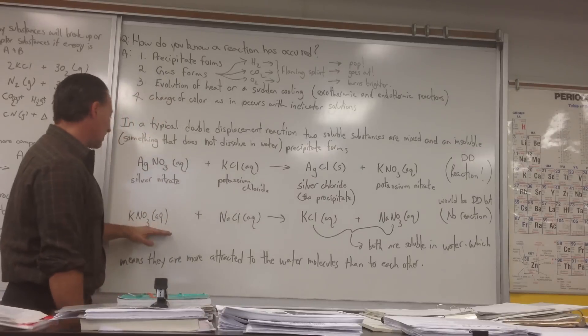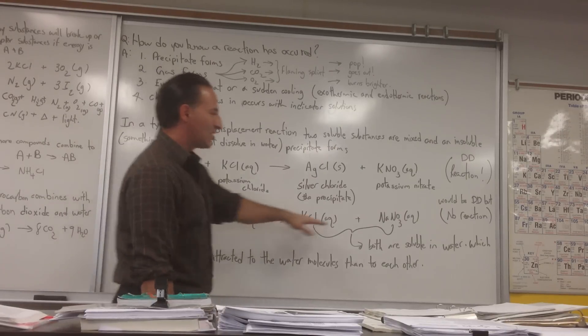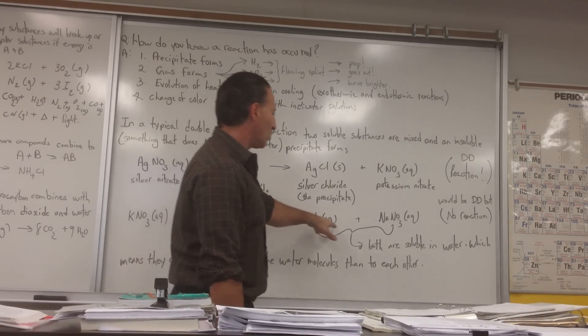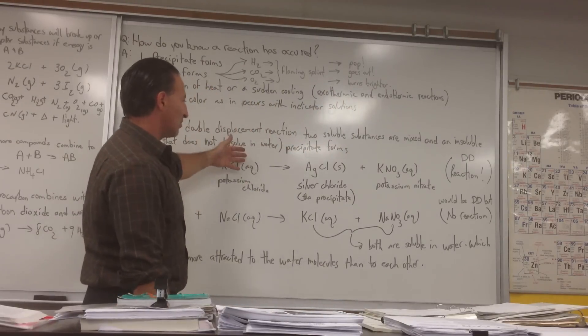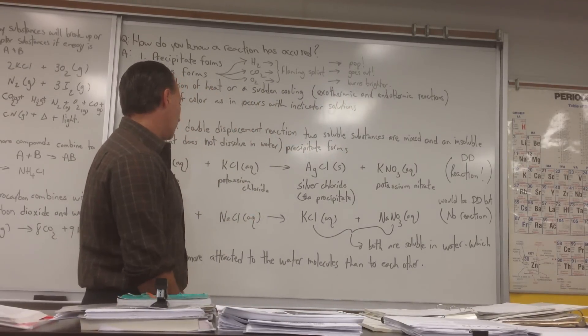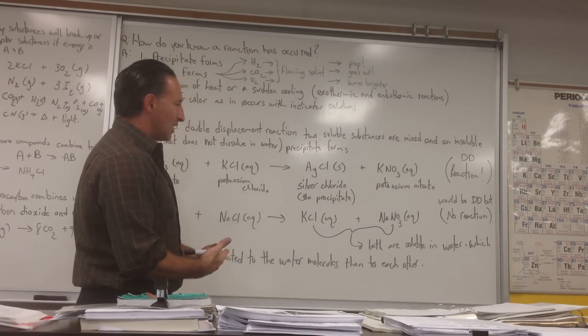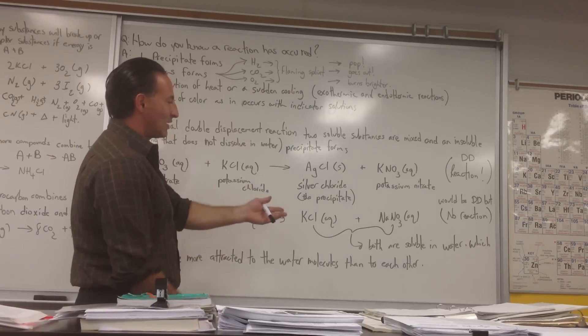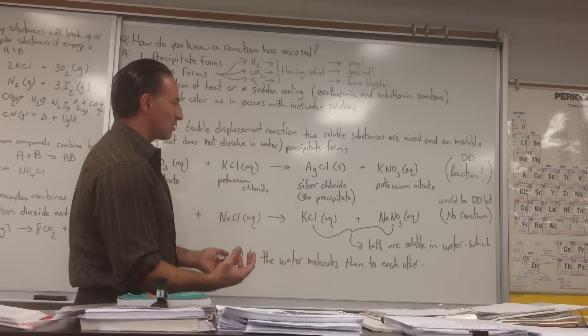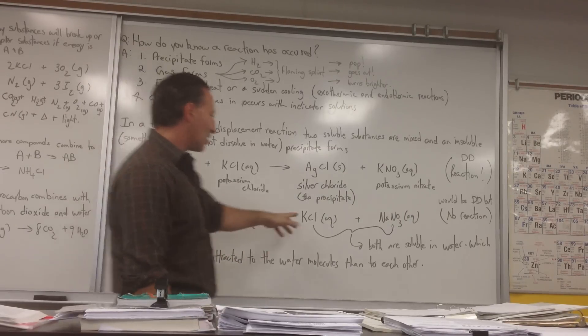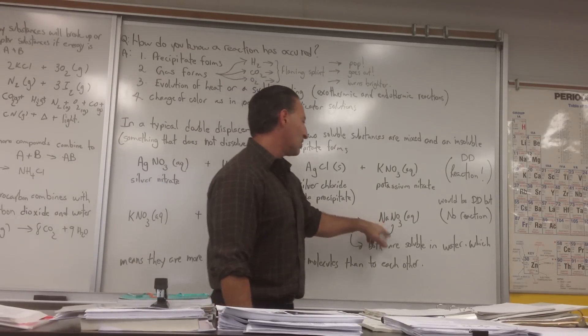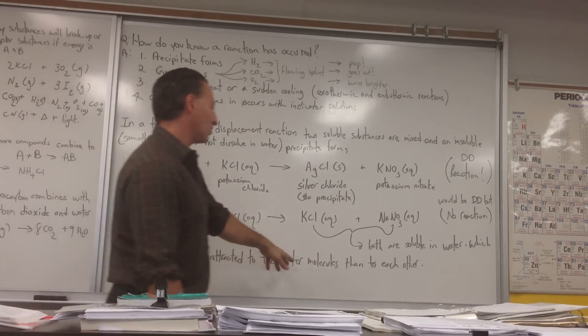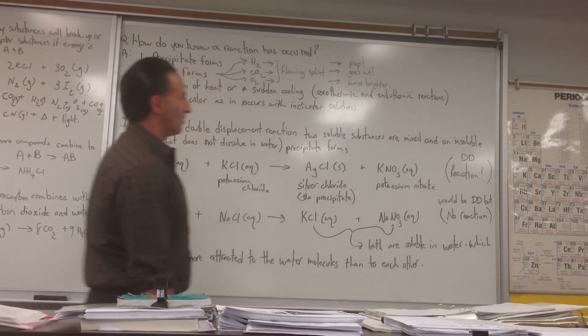On the other hand, if you were to mix potassium nitrate and sodium chloride, nothing would happen. You would get a clear solution with no precipitate. That would mean that there's no reaction. And why does that happen in some cases? Well, the answer to that is that the ions that would normally form a precipitate are attracted to each other, but not as much as they're attracted to the water. So when that happens, they stay associated with the water, and there's no reaction. Both of these salts are soluble in water, which means they are more attracted to the water molecules than to each other. And that means they're not going to form a crystal.